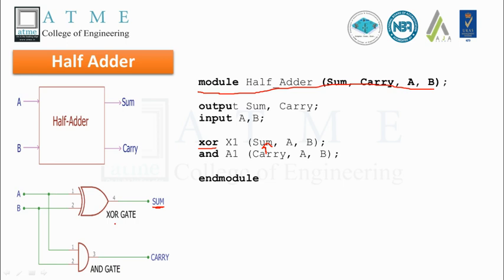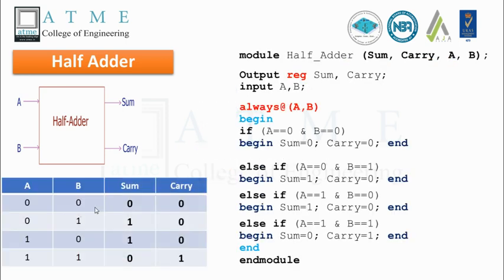Similarly, an AND gate is invoked with instance name a1 — instance names are user-defined. The output carry is listed first, followed by inputs a and b. This approach is popular when the designer is aware of the logic gate interconnection; the Verilog module directly mirrors that interconnection diagram.